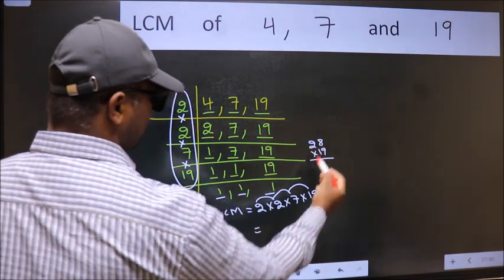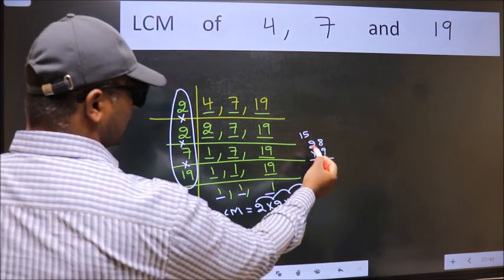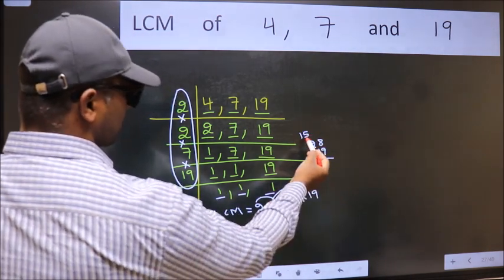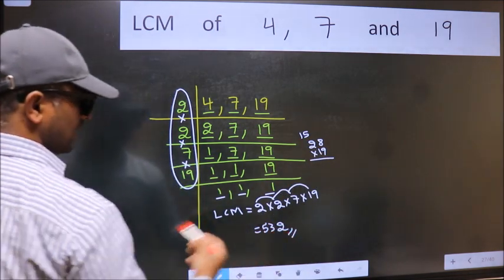Working through the multiplication: 19 times 8, carry 2, 19 times 2 is 38 plus 15 is 53, so 532 is our LCM.